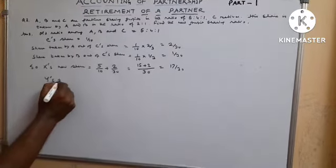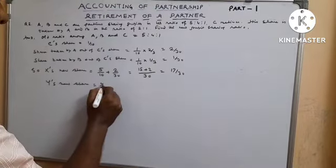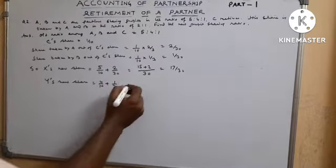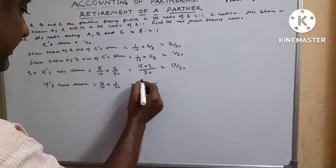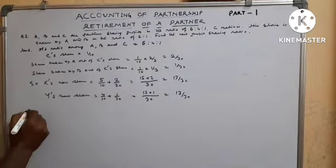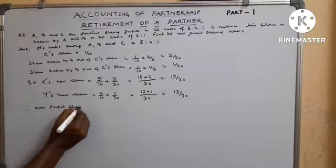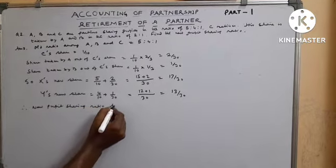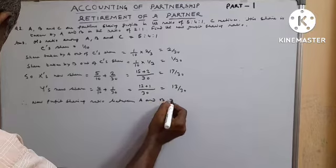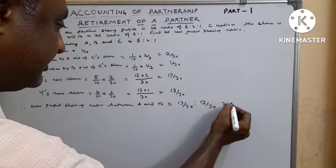B's new share equals old share 4/10 plus 1/30. B gains 1/30. LCM is 30, giving 12/30 plus 1/30 equals 13/30. Therefore, the new profit sharing ratio between A and B equals 17/30 : 13/30, which equals 17:13.